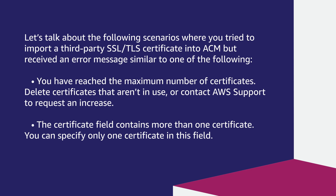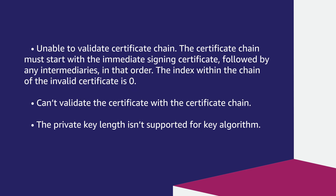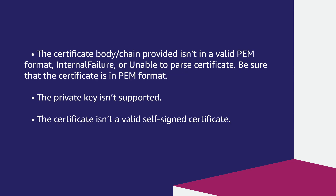Let's talk about the following scenarios where you try to import a third-party SSL or TLS certificate into ACM but receive an error message similar to one of the following: 'You have reached the maximum number of certificates — delete certificates that are not in use or contact AWS support to request an increase.' 'The certificate field contains more than one certificate — you can specify only one certificate in this field.' 'Unable to validate certificate chain — the certificate chain must start with the immediate signing certificate, followed by any intermediaries in that order.' 'The index within the chain of the invalid certificate is zero.' 'Cannot validate the certificate with the certificate chain.' 'The private key length is not supported for the key algorithm.' 'The certificate body provided is not in a valid PEM format.' 'Internal failure or unable to pass certificates — be sure that the certificate is in PEM format.' 'The private key is not supported.' 'The certificate is not a valid self-signed certificate.'